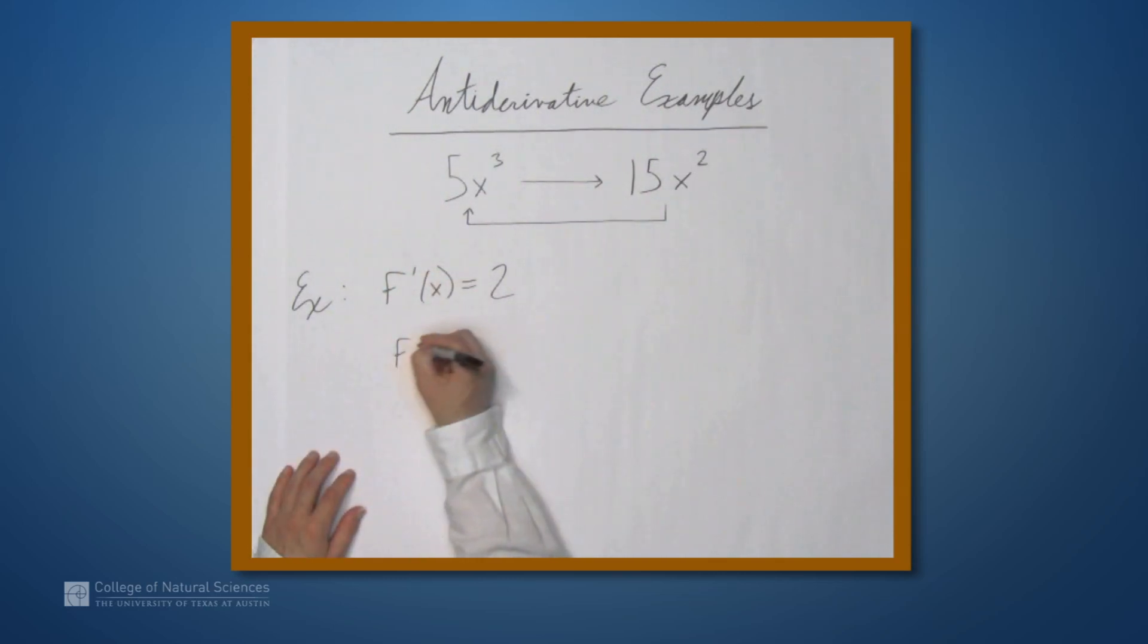Well, then what does that say about f? What kind of function has a constant derivative? Well, we know those kinds of functions. They're lines. So this thing must be something like 2x. And we know the derivative of 2x is 2. But there's one extra thing we have to make sure to do. We have to put a plus c here.